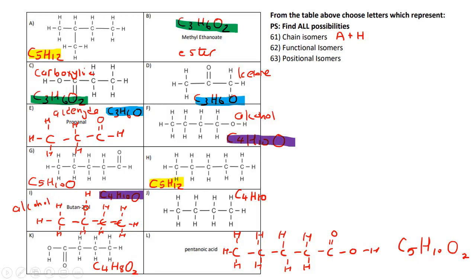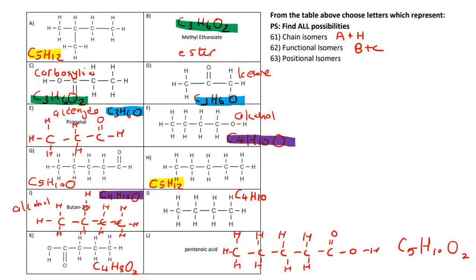For functional isomers, these have to be different functional groups. So B and C are functional isomers because one is an ester and the other is a carboxylic acid. And D and E are also functional isomers because one is an aldehyde and the other is a ketone — so D plus E.